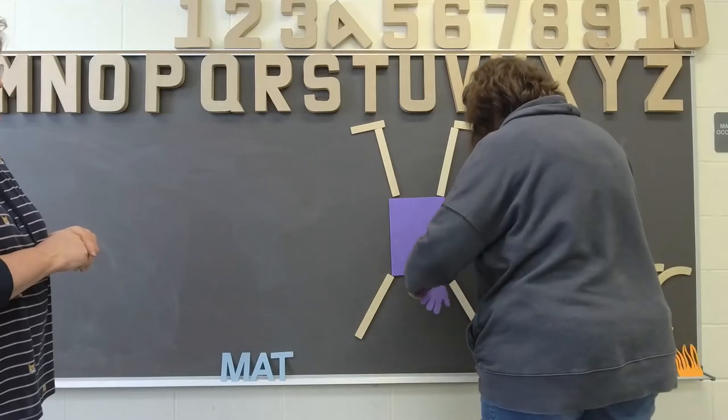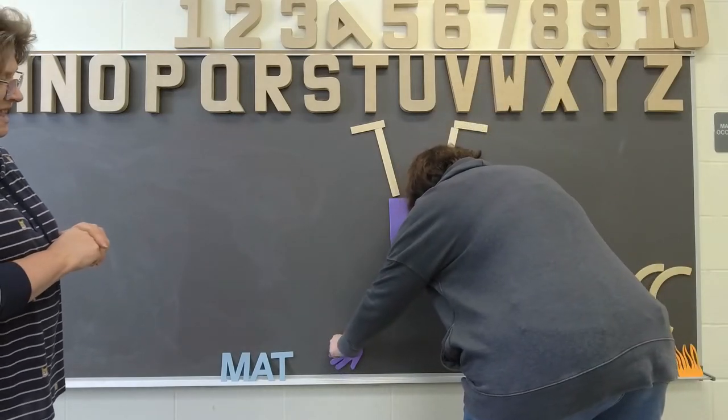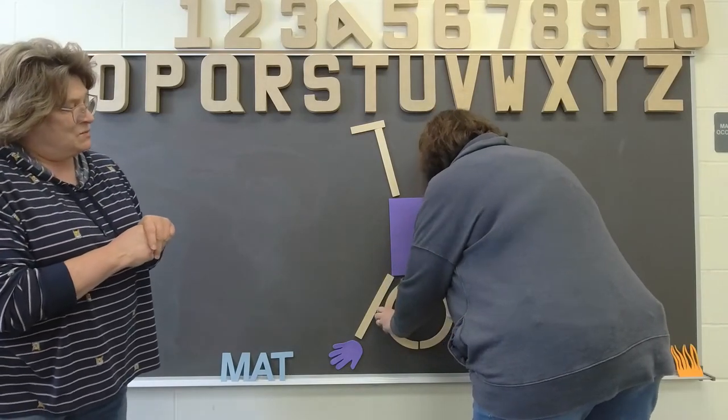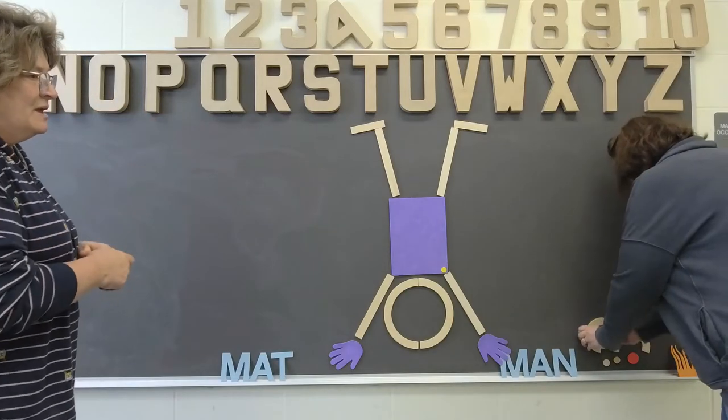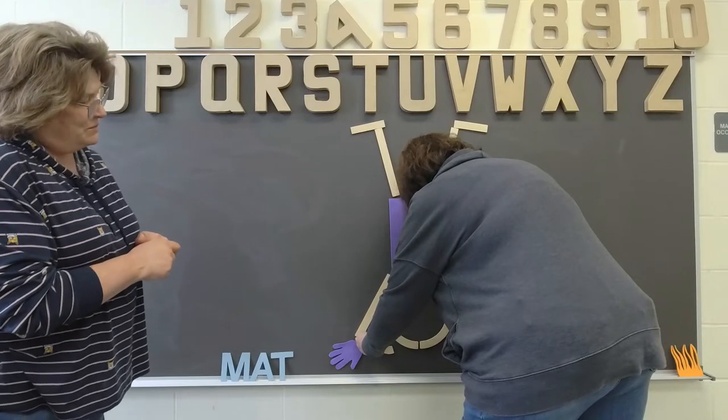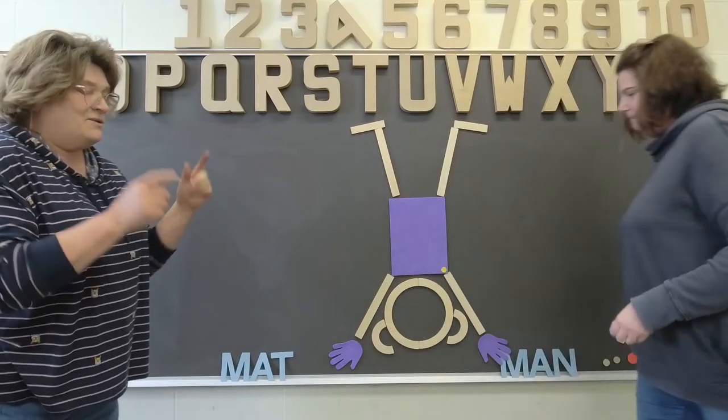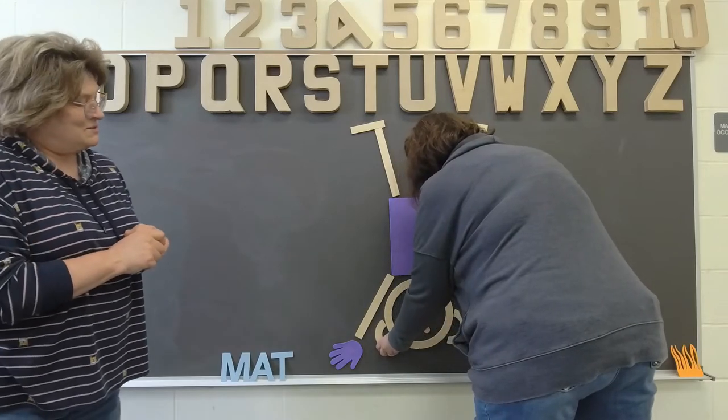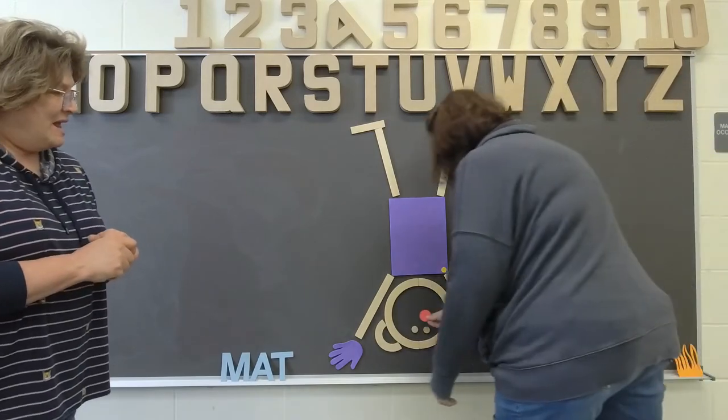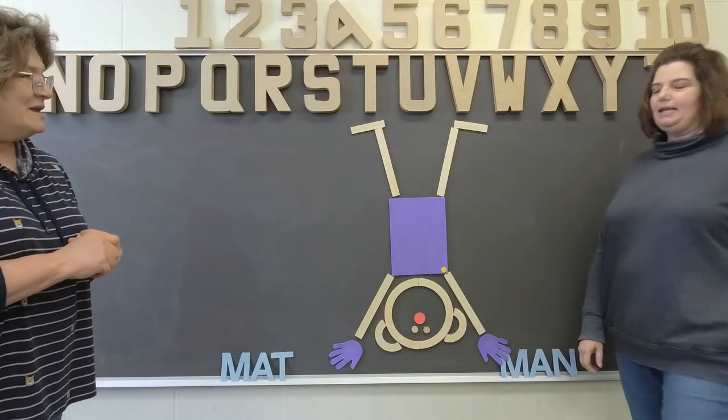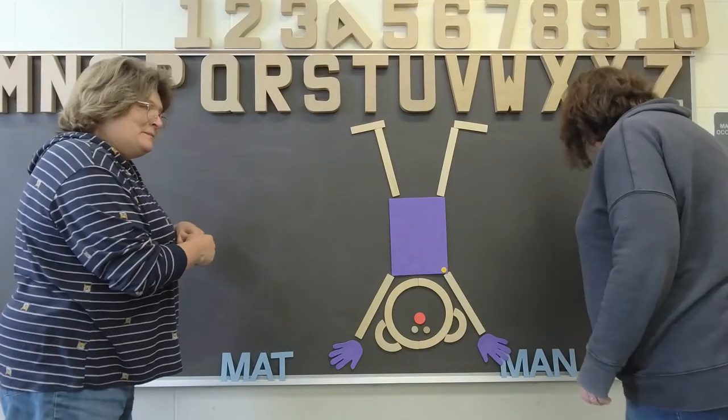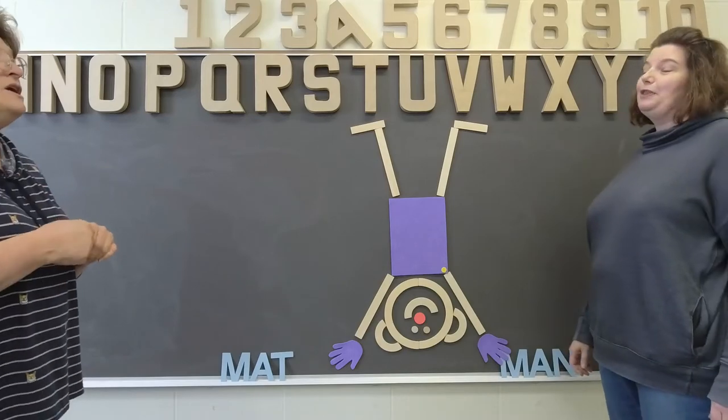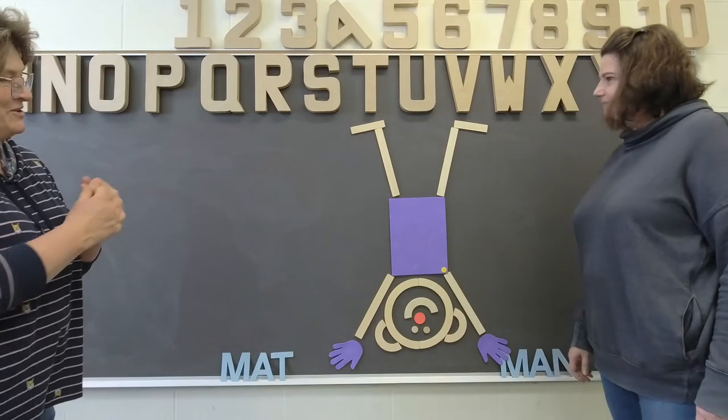Mapman has two hands, two hands, two hands. Mapman has two hands to hold himself upright. Mapman has one head, one head, one head. Mapman has one head so that he can think. Mapman has two ears, two ears, two ears. Mapman has two ears so that he can hear. Mapman has two eyes, two eyes, two eyes. Mapman has two eyes so that he can see. Mapman has one nose, one nose, one nose. Mapman has one nose so that he can smell. Mapman has one mouth, one mouth, one mouth. Mapman has one mouth so that he can smile. Did you make yours upside down? It's pretty funny.